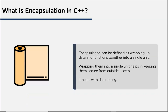Encapsulation is a very important concept of object-oriented programming. It can be defined as the wrapping up of data and functions together into a single unit — just like a capsule. Wrapping them into a single unit helps in keeping them secure from outside access. Inside a class, variables and functions are declared and bound together, which implements encapsulation.